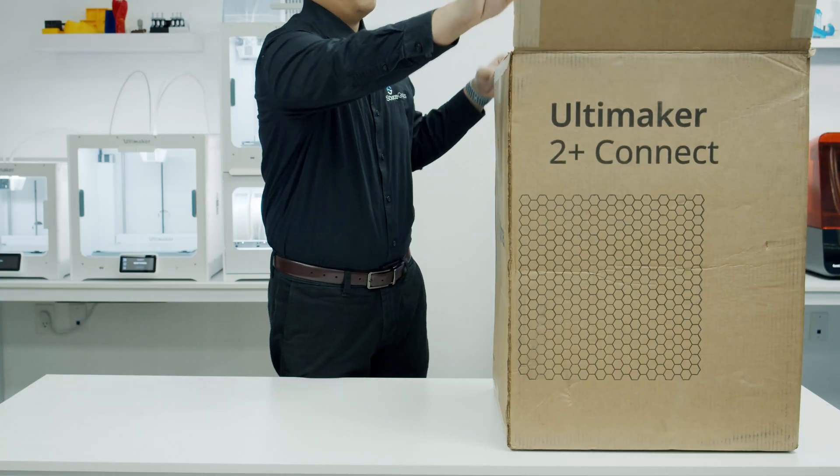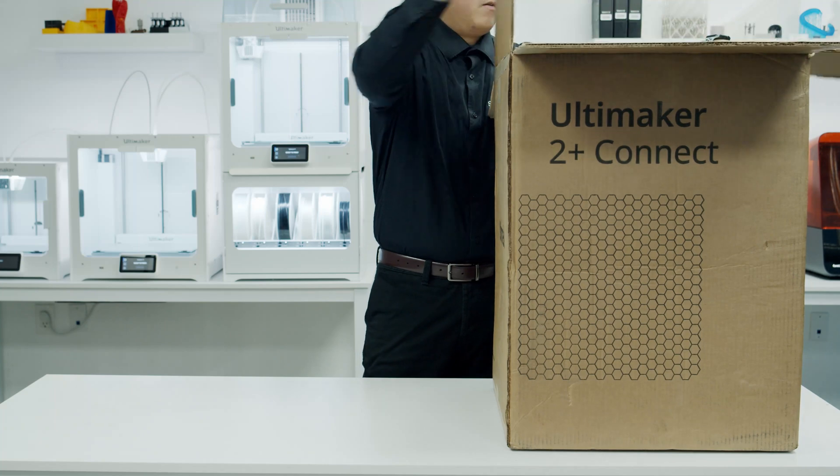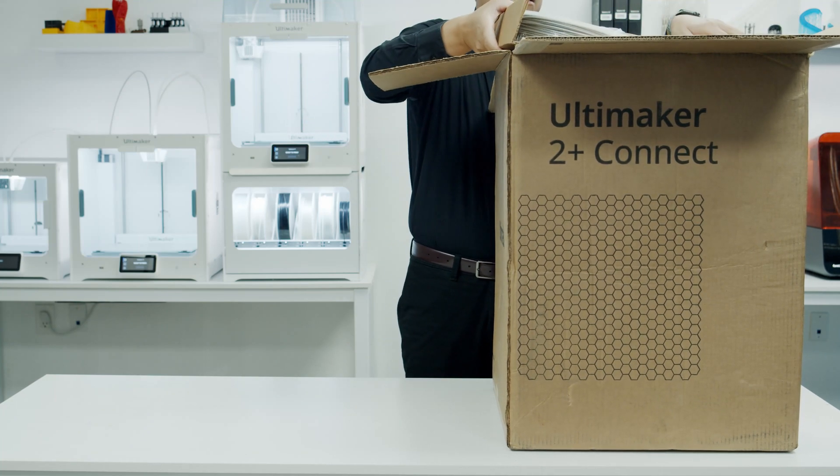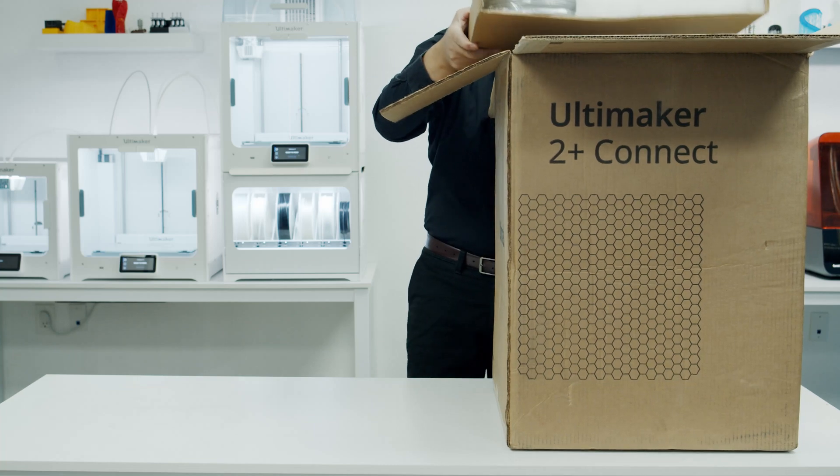Let's get straight into unboxing the printer. When you open up the box, the first thing you have is a foam piece with all the accessories for the printer.